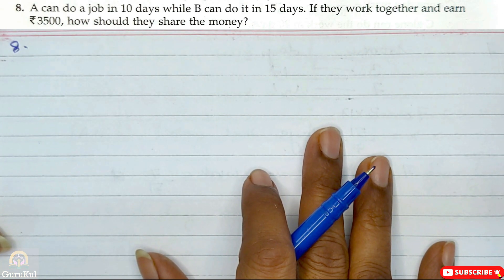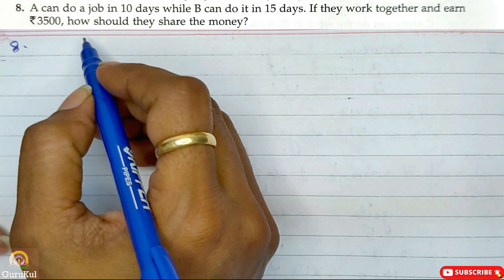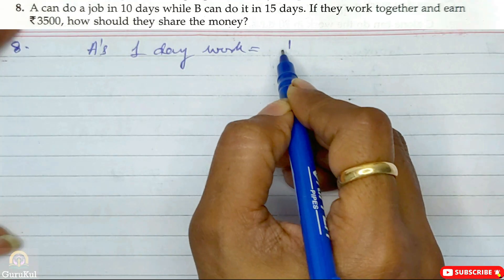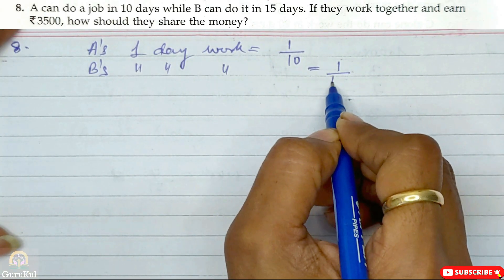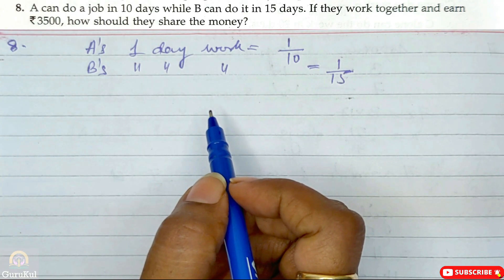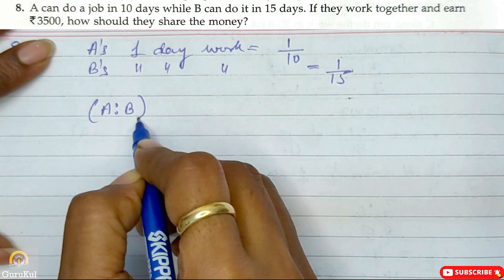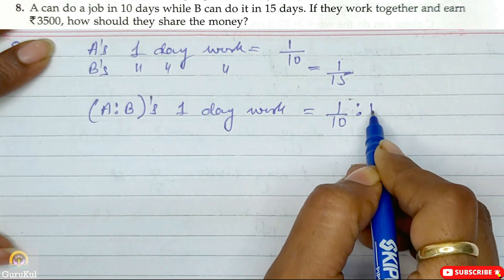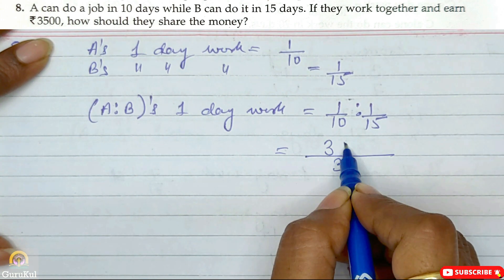Question 8. A can do a job in 10 days while B can do it in 15 days. If they work together and earn rupees 3500, how should they share the money? First we find both their one day work. A's one day work is 1 by 10 while B's one day work will be 1 by 15. When sharing amount, we find the ratio. A is to B one day work is equal to 1 by 10 is to 1 by 15. Taking LCM which is 30, this becomes 3 is to 2. This is the ratio.